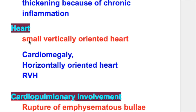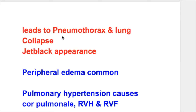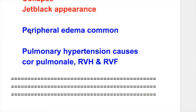Heart: In emphysema, there is a small, vertically oriented heart. In bronchitis, there is cardiomegaly and a horizontally oriented heart with right ventricular hypertrophy present. Cardiopulmonary involvement: Rupture of emphysematous bullae in emphysema leads to pneumothorax and lung collapse, giving a jet black appearance. In chronic bronchitis, there is peripheral edema which is common, and pulmonary hypertension causes cor pulmonale, right ventricular hypertrophy and right ventricular failure.